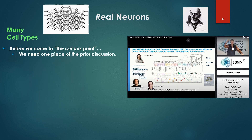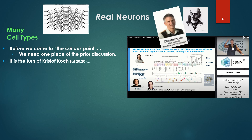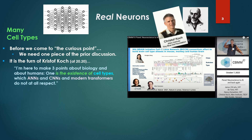Before we come to the curious point, we need one piece of prior discussion. It's the turn of Christof Koch on this panel, roughly at the 20-minute mark, to make his comments. To quote: 'I'm here to make three points about biology and about humans.' The only point we're going to look at is the existence of cell types, which ANNs, CNNs — different types of artificial neural networks — and modern transformers, the GPTs, do not at all respect.